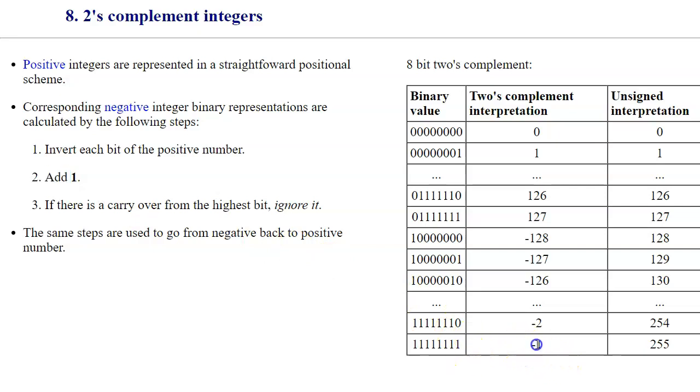Look how minus one is represented by all ones compared to all zeros over here. And then this used to be zero, and now we added one to it, so it becomes all bits set to one. This is the representation of a negative one in two's complement integer type of encoding.